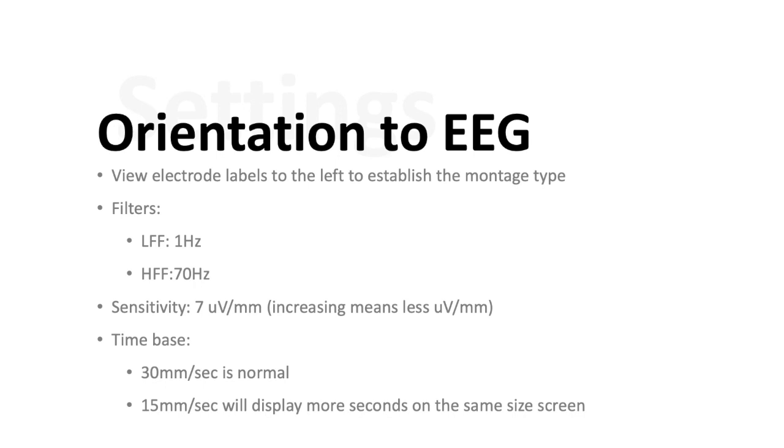Basically things get bigger on the EEG when you decrease the amount of microvolts per millimeter that you're displaying because every millimeter is displaying even more of the signal than it was before. Hopefully that makes sense. The time base is very important to look at as well. 30 millimeters per second is the normal time base. 15 millimeters per second will display more seconds on the same screen, essentially twice as many. This can be useful when trying to get a vantage point over time, but 30 millimeters per second is the normal setting.